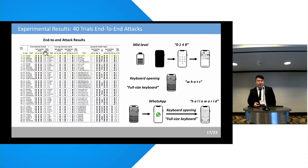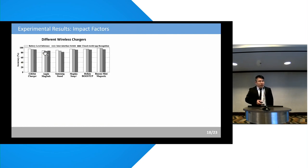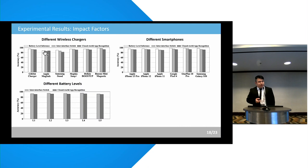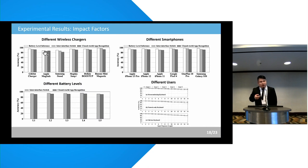Among the 40 trials of end-to-end attacks, WISERS achieved about 55% accuracy in one attempt, and 100% success rate within five attempts. We have also evaluated WISERS performance in different wireless chargers, different smartphones, different battery levels, and different users. The results present that our attack framework is more generic.